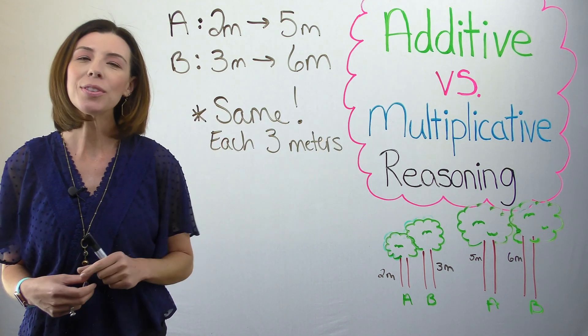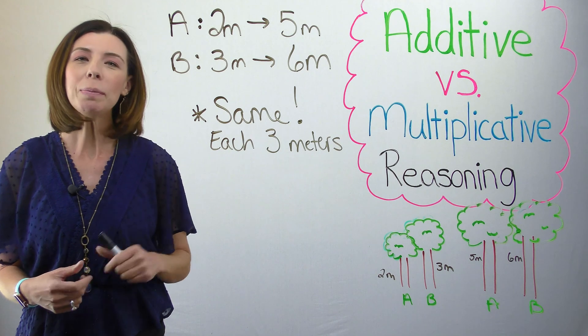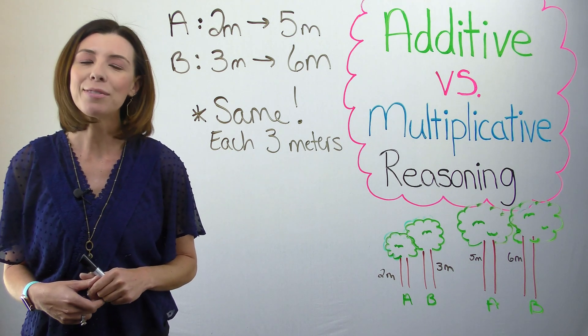If you said that they each grew the same amount, three meters, you would be thinking in terms of additive reasoning.